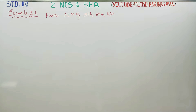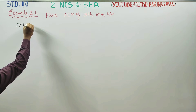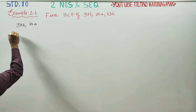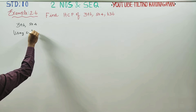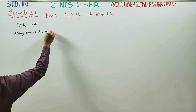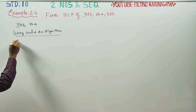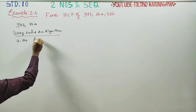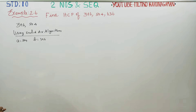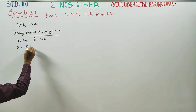You have to find the HCF of 3 numbers. First take the first 2 numbers, then the last number. I am going to start with 396 and 504. I am going to use the Euclidean Division Algorithm. The Euclidean Division Algorithm states: A is equal to BQ plus R.